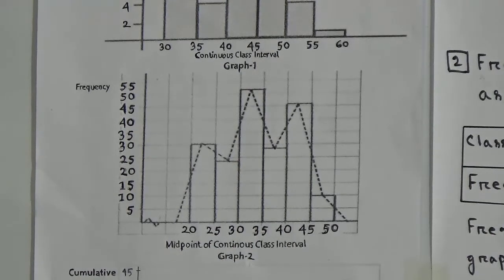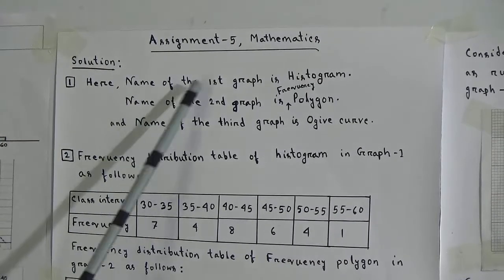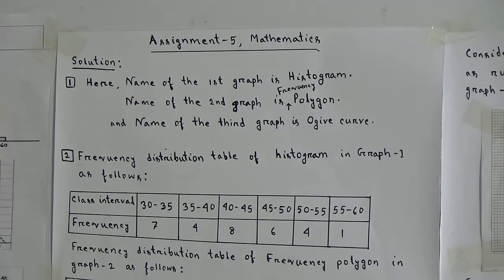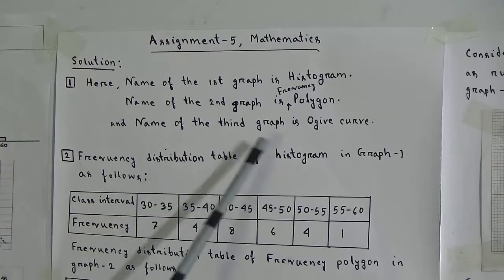Now the third graph. In the x-axis the upper limit of class intervals exists, and in the y-axis cumulative frequency exists. So we can say that this graph is the graph of an ogive curve. The name of the first graph is histogram, the name of the second graph is frequency polygon, and the name of the third graph is ogive curve.